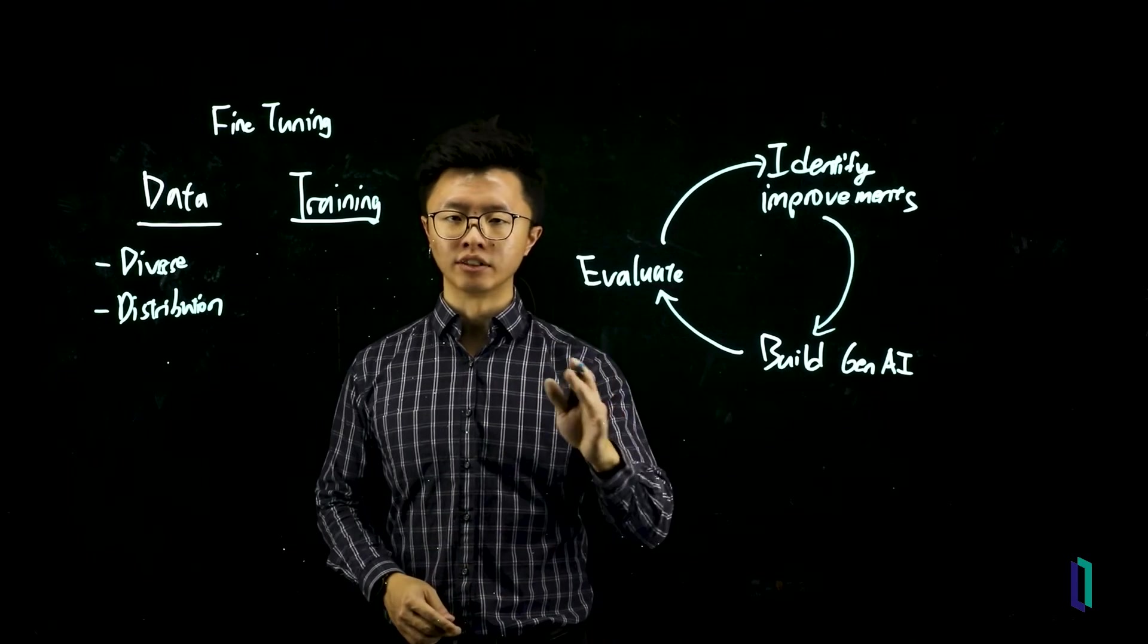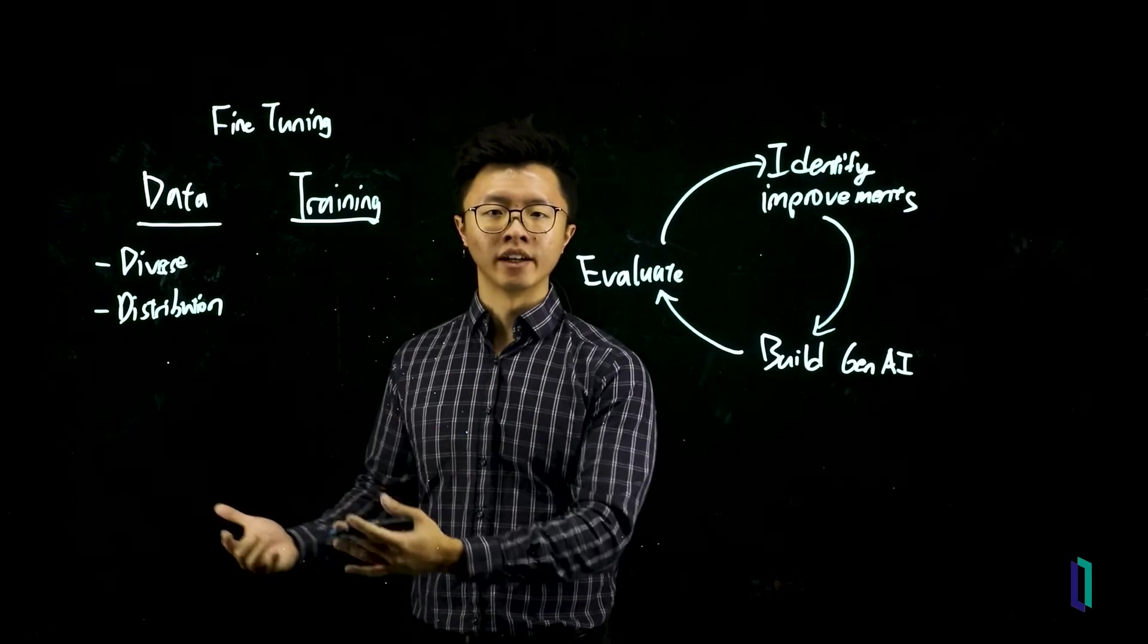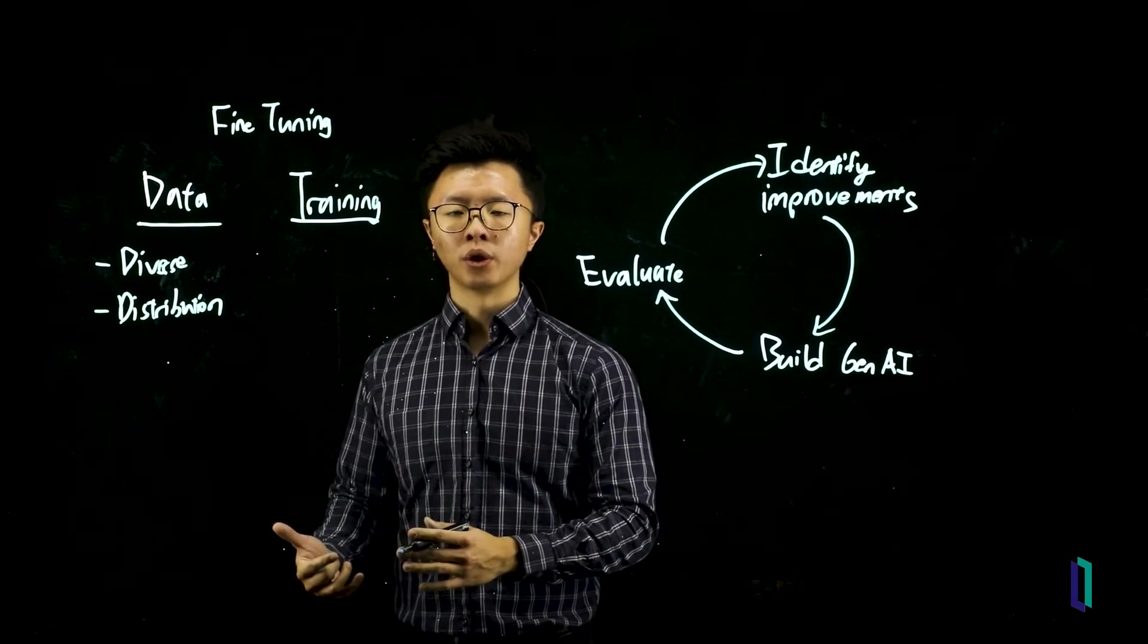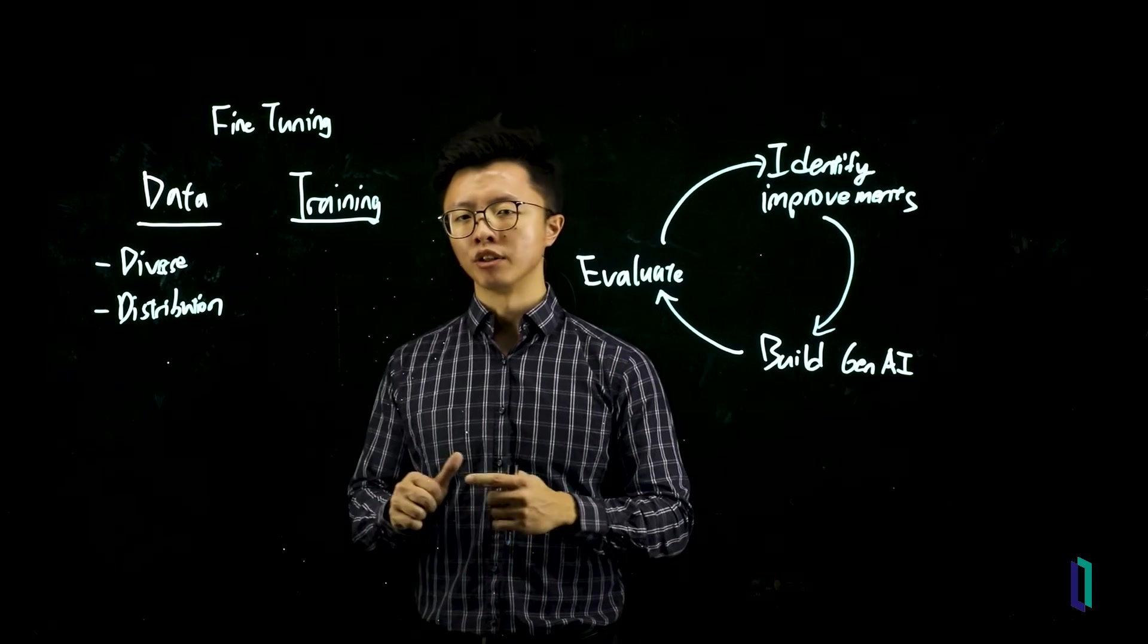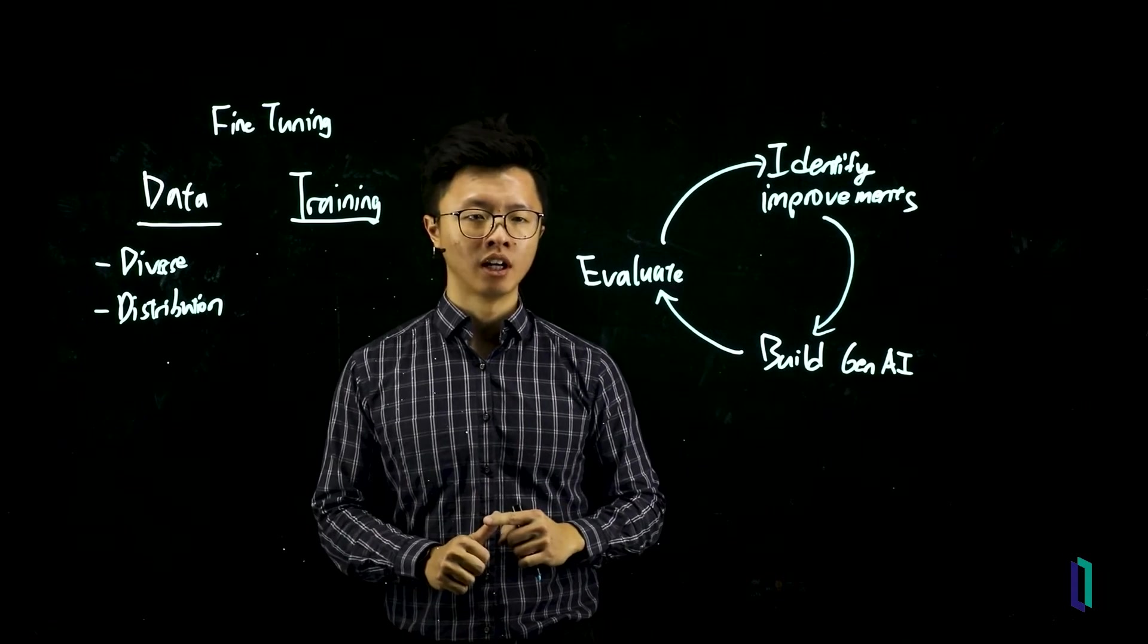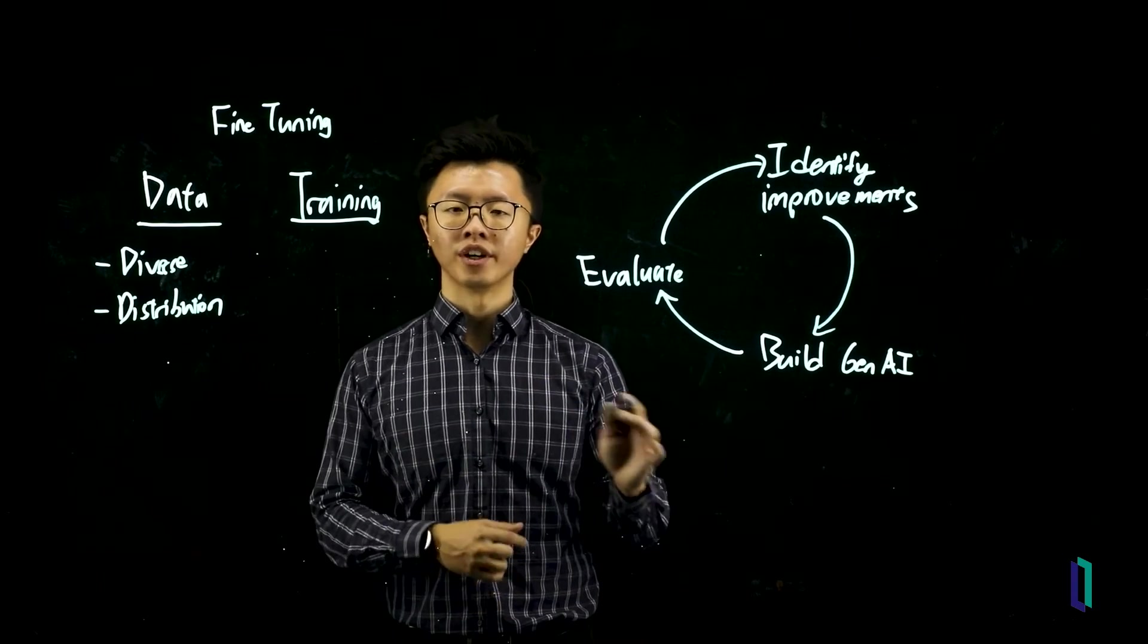So for example, you see that your model is failing across categories 1 and 2. I would go into my data, take a look if I have enough data in categories 1 and 2 to understand if, is it insufficient data? Or is it that my data in categories 1 and 2 are simply wrong? And those are causing my evaluations to fail.